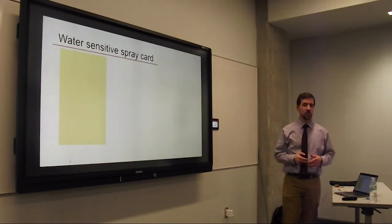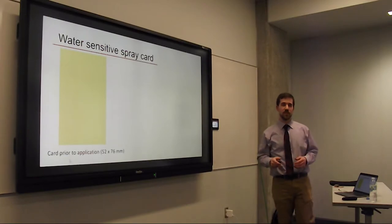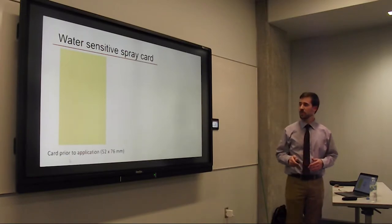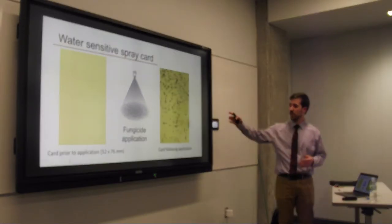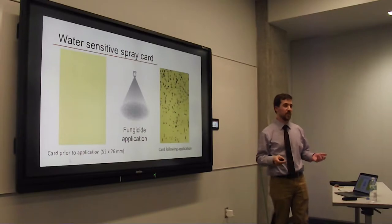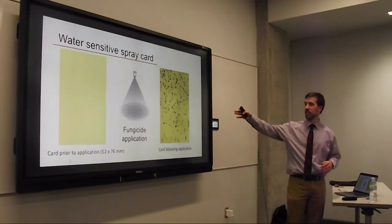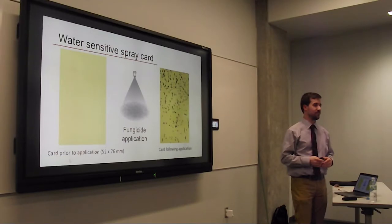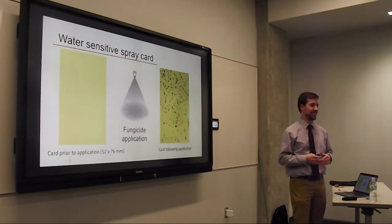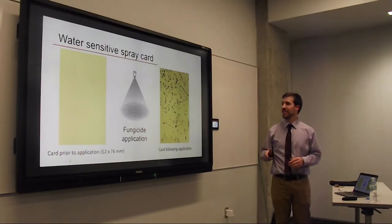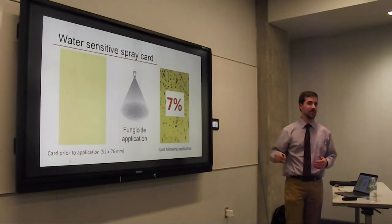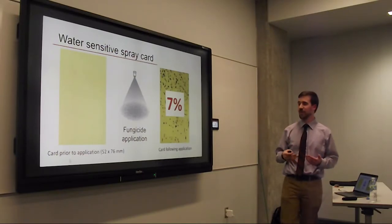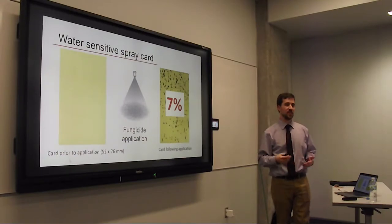Here is what a water-sensitive spray card looks like before placement — about two by three inches. Following the fungicide application, the card changes color. When I asked what percentage of one card was covered, someone guessed 5% — it was actually 7%. That's why we use a computer program to analyze the percentage covered, because it's really hard to get an accurate number with your own eyes and stay consistent.